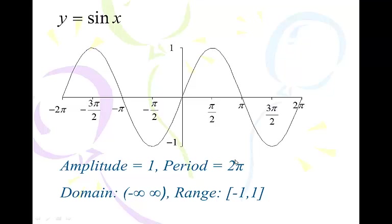Your period is 2π — in 2π radians you can see the whole thing, one full cycle. The domain is all real numbers, negative infinity to infinity. You can put anything you want in for x and hit sine, and it's going to return something — you'll never get a division by zero error. The range of possible values of y is negative 1 to 1.